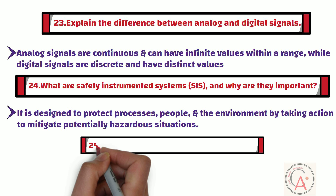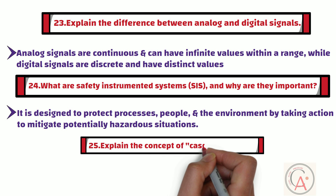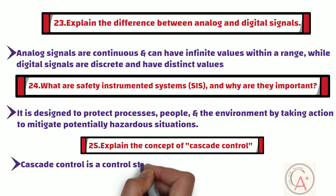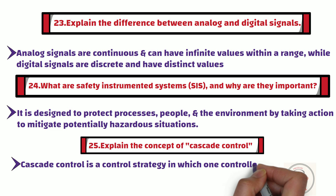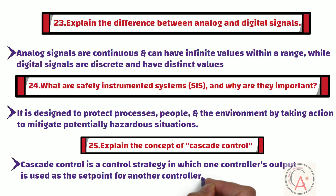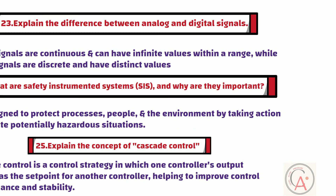Question number 25 is: explain the concept of cascade control. Cascade control is a control strategy in which one controller's output is used as the set point for another controller, helping to improve control performance and stability.